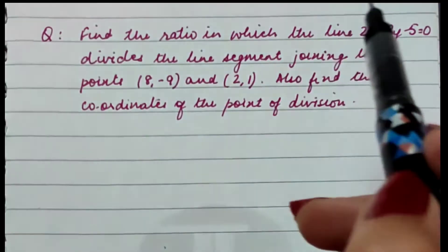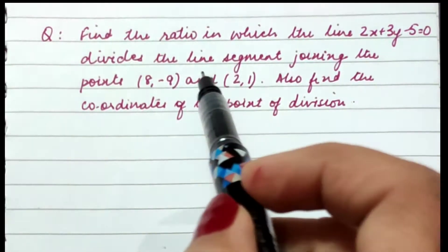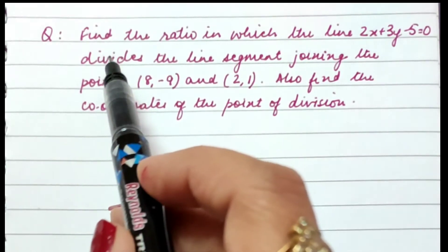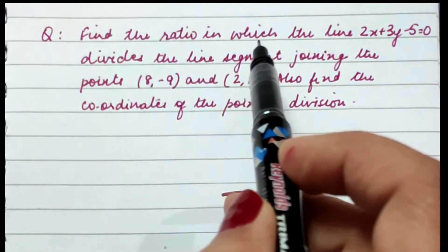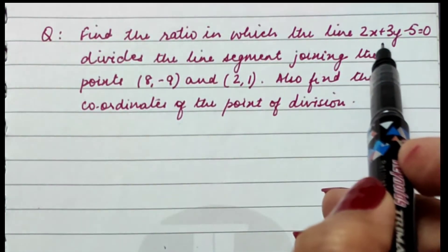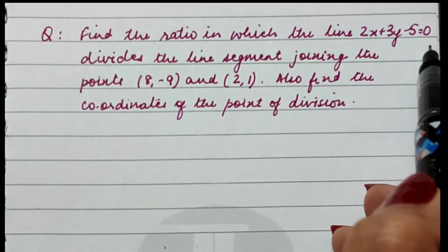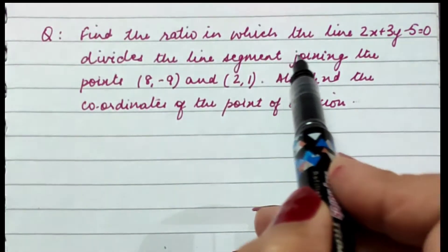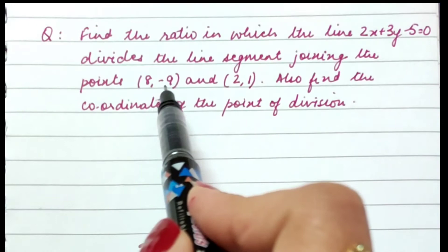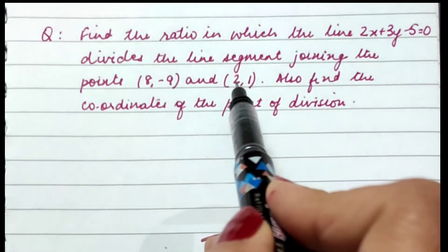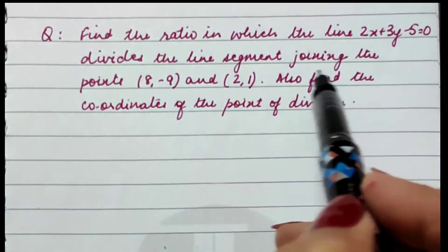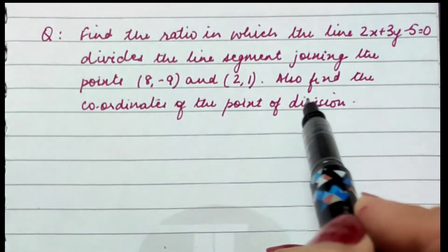This is an important question of coordinate geometry. Find the ratio in which the line 2x + 3y - 5 = 0 divides the line segment joining the points (8, -9) and (2, 1). Also find the coordinates of the point of division.